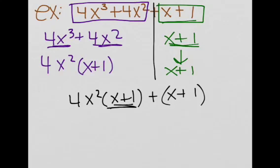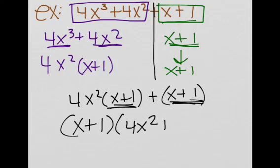Realize they both have factors of (x + 1). So we're going to rewrite this as (x + 1)(4x² + 1). And this is our solution.